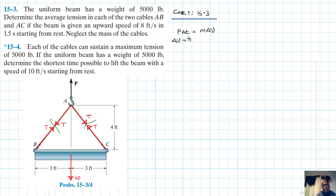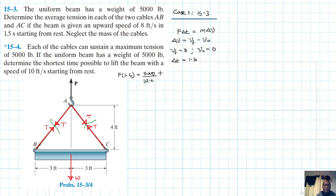Where delta v equals v_final minus v_naught. We have v_final equal to 8, v_naught equal to 0, and delta t equal to 1.5 seconds. Plugging everything in: F times 1.5 equals the mass, which is 5,000 divided by 32.2 (the acceleration due to gravity in ft/s²), times v_final of 8 minus 0.